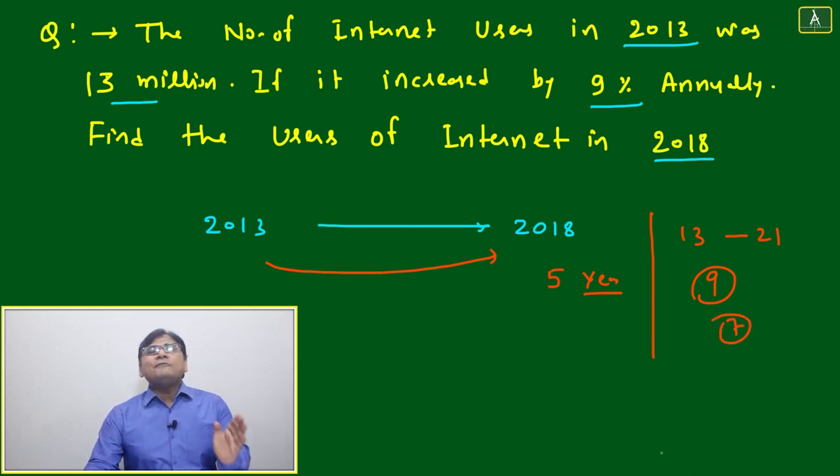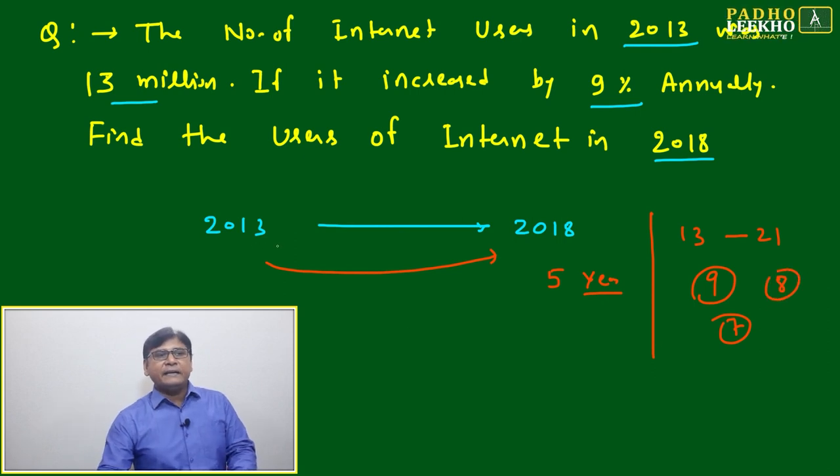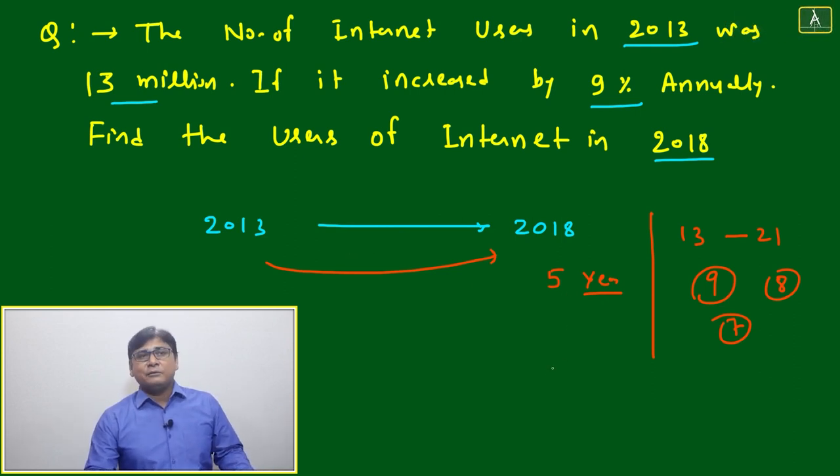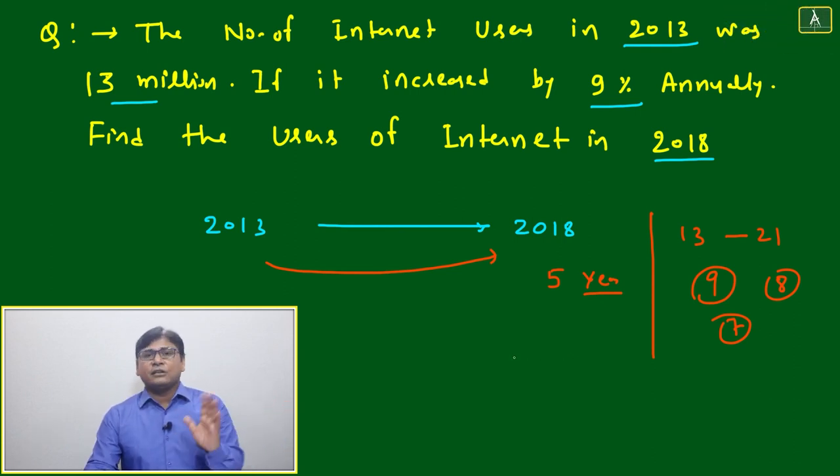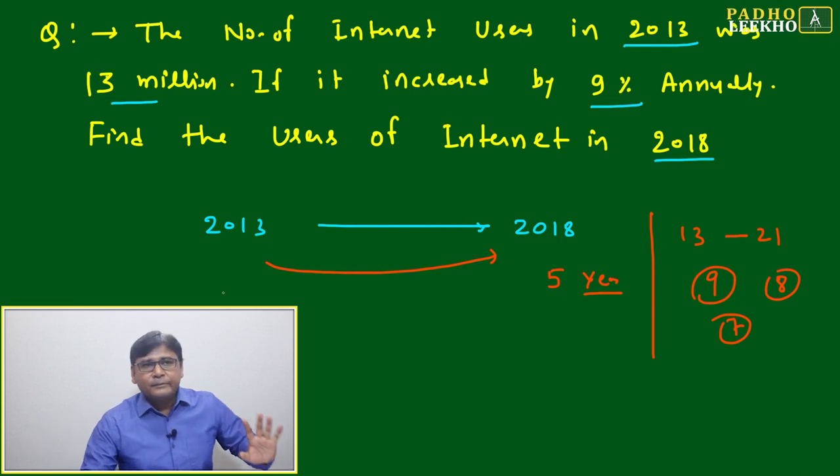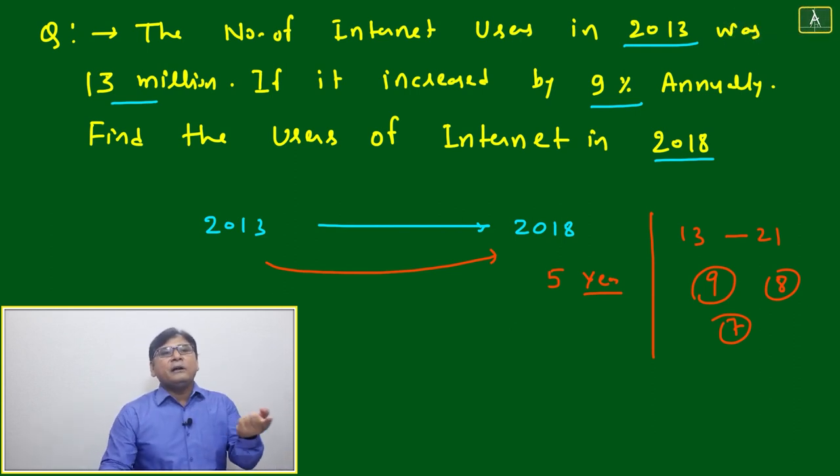Same thing is happening here. 13 is excluded because after 13 only changes started: 13 to 14, 14 to 15, 15 to 16, 16 to 17, 17 to 18. So 18 is included, 13 is excluded, which means the difference is five years. I'm just reminding this because sometimes in DI application you'll get confusion about how many years to take. If you take one number wrong you'll get a different answer.